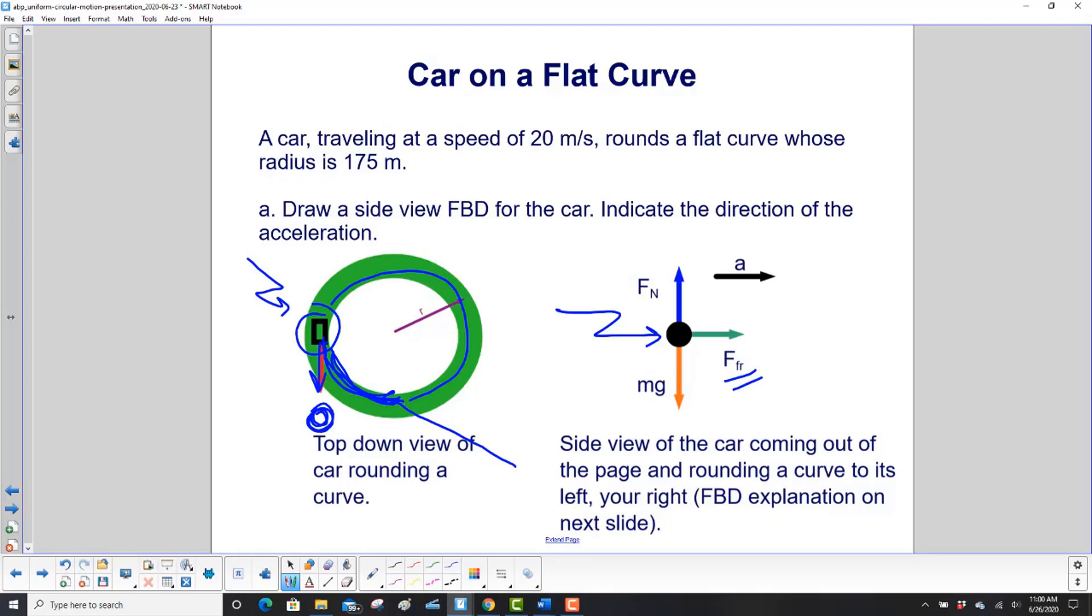So the tires push down on the ground and the ground pushes back. And since you've turned the wheels, it'll push the driver to the left, or if you're watching, to the right. So that's the force that's putting you in circular motion. The acceleration is in that direction, towards the middle of this curve.